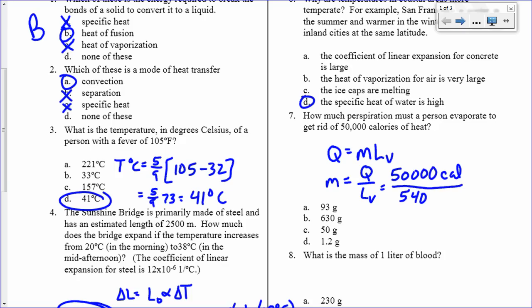it's 540. And that's in calories per gram. And actually, in the equation sheet, I call this H. But you might also see it as L. So I'll make this into an H as well. And so 50,000 divided by 540, I get 93 grams.